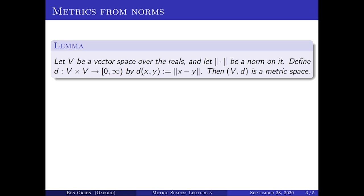Stated as a lemma: this really is a metric space, and one needs to verify the three axioms. All three of them are straightforward consequences of the three axioms for a norm. The proof of the triangle inequality follows from a straightforward substitution in the inequality norm of X plus Y less than or equal to norm of X plus norm of Y. I leave that as an easy exercise.